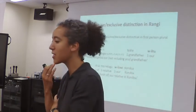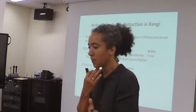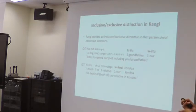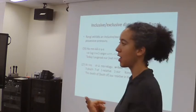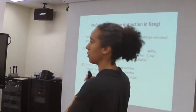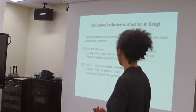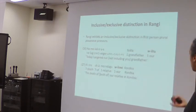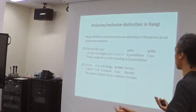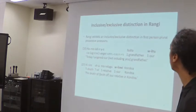Rangi has an inclusive-exclusive distinction in first-person plural possessive pronouns. 'Today I angered our grandfather' — when talking with Andrew, 'our' here is the exclusive form ('kawitu'), meaning it's not Andrew's grandfather, it's mine and my cousins'. If it's inclusive — shared with the person you're speaking to — you use a different form. So these are two distinct forms encoding inclusive versus exclusive first-person plural possession.